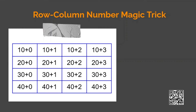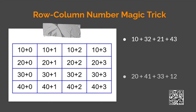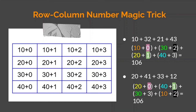Here are two examples. In the first one, the numbers chosen are 10, 21, 32 and 43 and their sum is 106. In the second one, we have chosen 20, 41, 33 and 12 and their sum is also 106. You can see in each example, in the tens place we have 1, 2, 3 and 4, and in the units place we have 0, 1, 2 and 3.